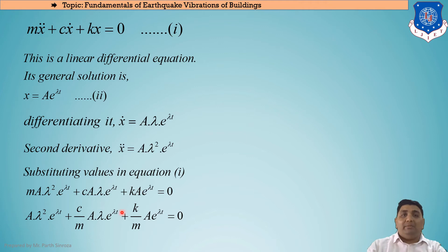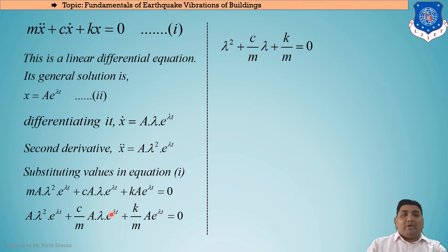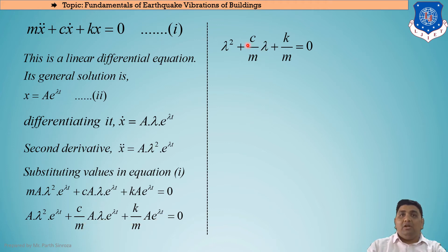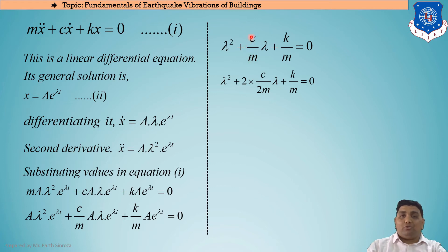Multiplying and dividing the middle term by 2, we get: λ² + 2·(C/2M)·λ + K/M = 0. We will now deal with two substitutions: K/M relates to natural angular frequency, and C/2M relates to the damping coefficient.